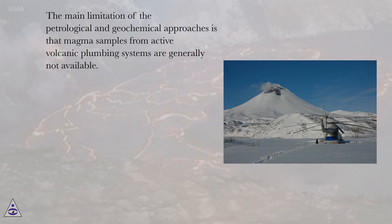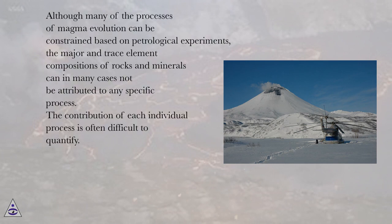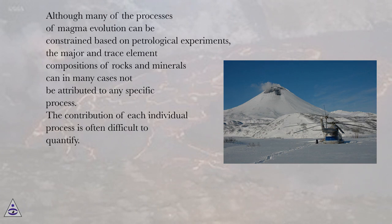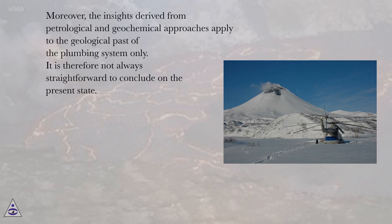The main limitation of the petrological and geochemical approaches is that magma samples from active volcanic plumbing systems are generally not available. Although many processes of magma evolution can be constrained based on petrological experiments, the major and trace element compositions of rocks and minerals can in many cases not be attributed to any specific process. The contribution of each individual process is often difficult to quantify. Moreover, the insights derived from petrological and geochemical approaches apply to the geological past of the plumbing system only, and it is therefore not always straightforward to conclude on the present state.